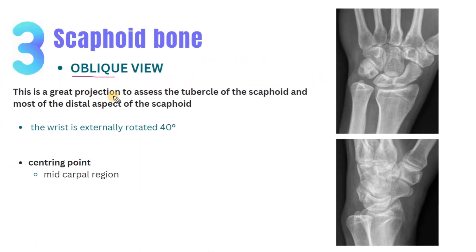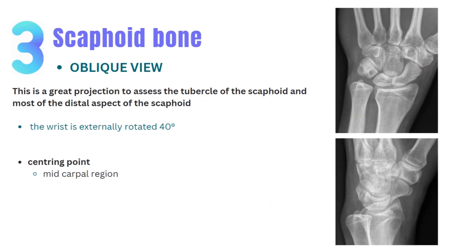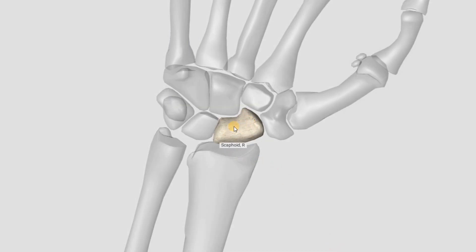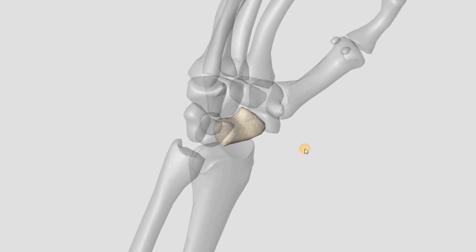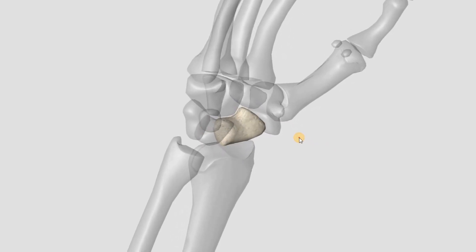The next projection is the oblique view, which is a great projection to assess the tubercle of the scaphoid. It's a 40-degree oblique view. Looking at these two X-rays of the same patient with a fracture of the scaphoid tubercle — you can easily notice the fracture on the oblique view, but in the PA view it's hard to see the fracture line. On this 3D model with the scaphoid highlighted, in the anterior-posterior view the tubercle of the scaphoid is behind other structures, and in the lateral view it superimposes with other structures. But in the 40-degree oblique view, you can clearly see the tubercle.